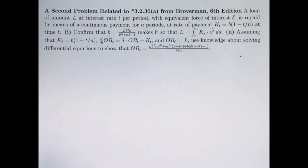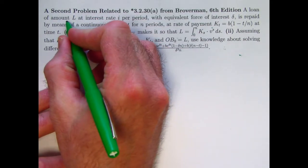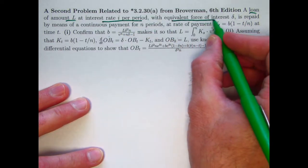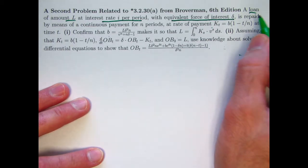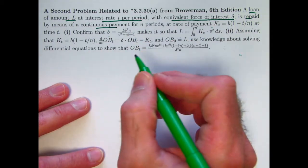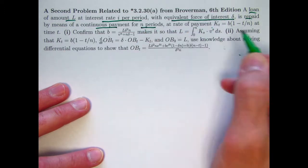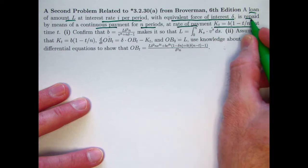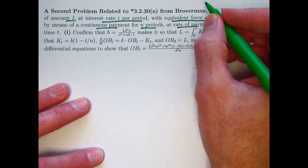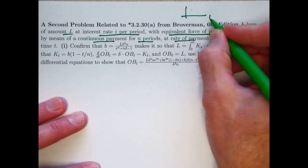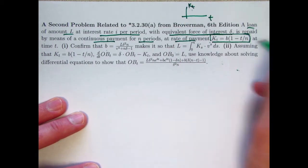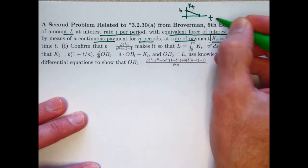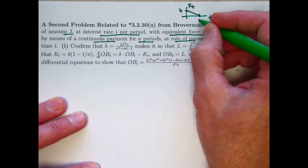It's the same basic setup as in the last couple videos. We've got a loan of amount L, interest rate i per period, corresponding equivalent force of interest delta, which would be the natural log of 1 plus i, repaid with a continuous payment stream over n periods, with rate of payment given by this function. You can see that's a linearly decreasing function of t if you were to graph it, K_t as a function of t. Its vertical intercept at t equals 0 is b and its horizontal intercept on the t axis is when t equals n.